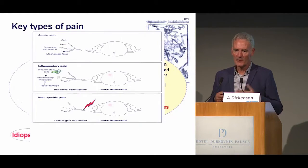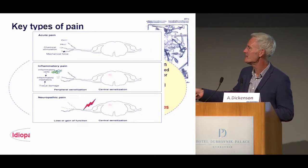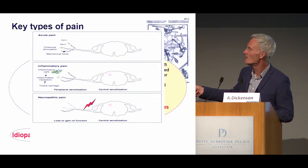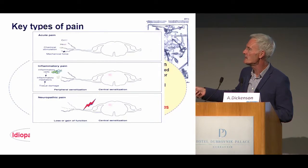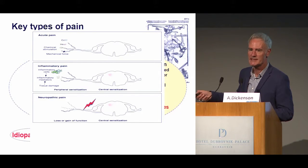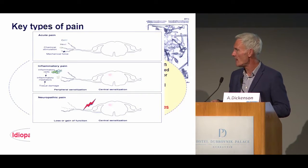When we have an acute painful stimulus, we have activation by various modalities of our pain sensors. In inflammatory pain, inflammatory cells release many chemicals, and tissue damage likewise. So we have a very clear peripheral sensitization, but that in turn will drive a central sensitization. In neuropathy, the tissue is normal but the problems are in the nerve as well.